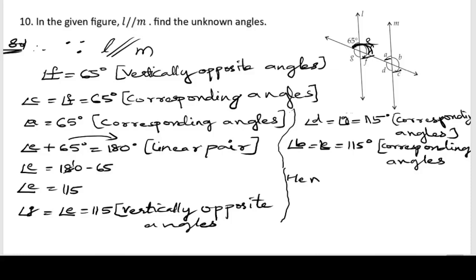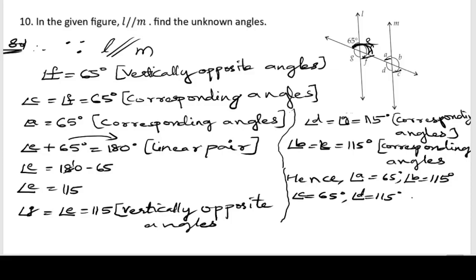Hence all the angles are: angle A equals 65 degrees, angle B equals 115 degrees, angle C equals 65 degrees, angle E equals 115 degrees, angle F equals 65 degrees, and angle G equals 115 degrees.